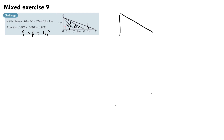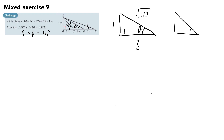We can draw a right angle triangle with theta here, with side lengths 3 and 1. The hypotenuse will have length equal to the square root of 1 squared plus 3 squared, which is root 10. We can do the same for phi, with the two side lengths being 1 and 2, and the hypotenuse being the square root of 1 squared plus 2 squared, which is root 5. We can place these two triangles next to each other.